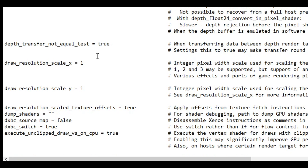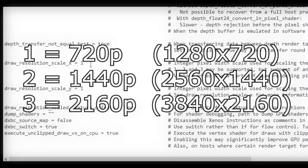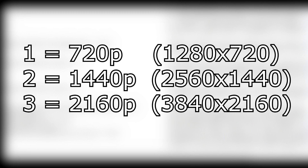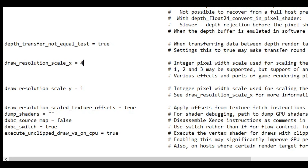Scrolling down a bit we arrive at the draw resolution scale settings. This configures Xenia to render games at a higher resolution. By default the emulator runs games at 720p, and we can change that here. The number 1 is 720p, the number 2 is 1440p, the number 3 is 4K resolution, and so on. You probably don't need to go over 4K, which is number 3.